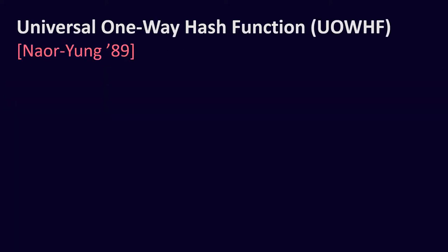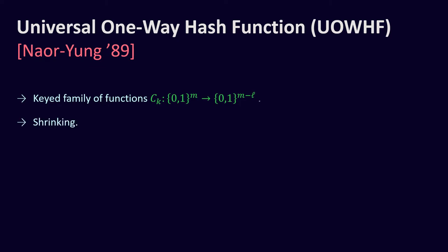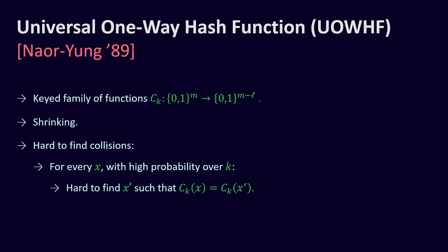Before moving on to the best constructions of universal one-way hash functions from one-way functions, let me remind you what a universal one-way hash function is. This primitive is a family of functions indexed by a key k such that the functions are shrinking, and yet it is hard to find a collision — meaning that for every x, with high probability over the key k, it is hard to find x' such that c_k(x) equals c_k(x').